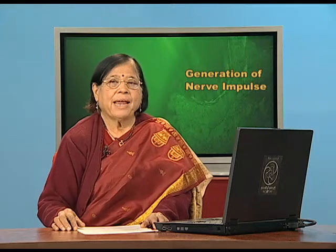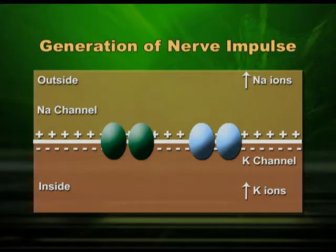When a particular point of a nerve cell is stimulated, the positively charged ions start moving in freely, with the result that the inside of the membrane becomes positively charged and outside becomes negatively charged. The positively charged ions move in and negatively charged ions move out. We can call this the depolarized condition.